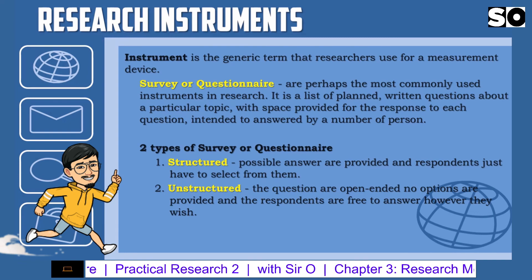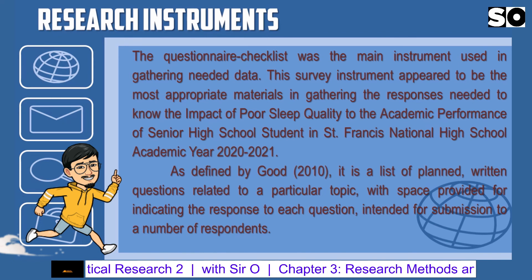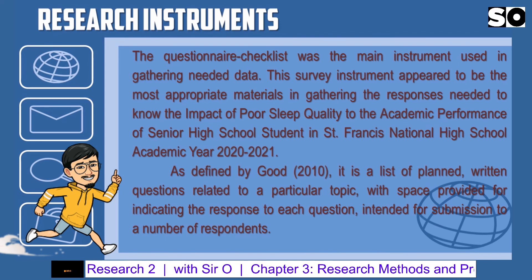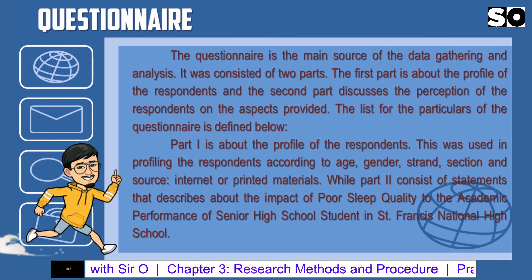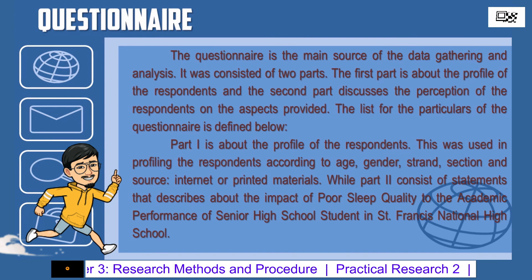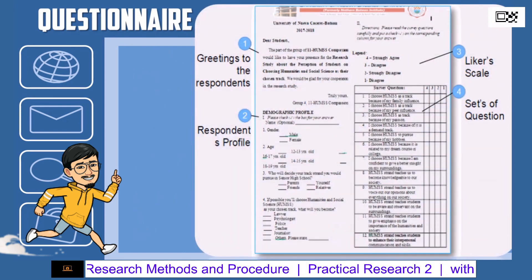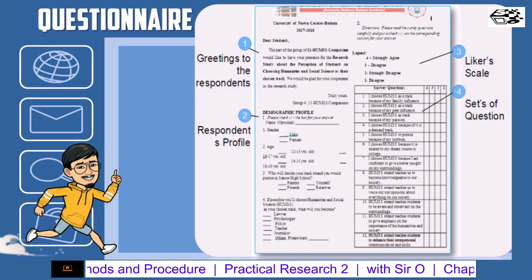Here is an example of a research instrument. In this example, they use a questionnaire. The questionnaires are divided into two parts: the first part is about the profile of the respondents, while part two consists of statements that describe the topic of the research. The key parts of the questionnaire include: greetings to the respondents, the respondent's profile, the rating scale, and the sets of questions.